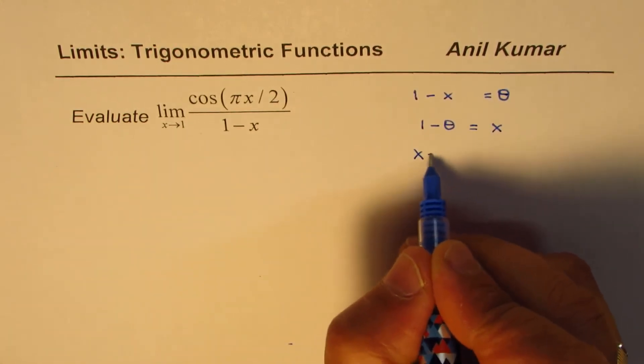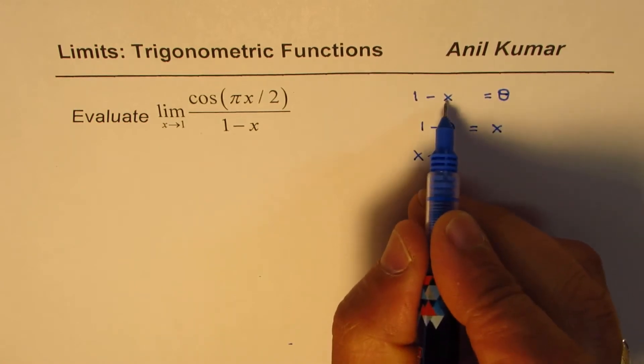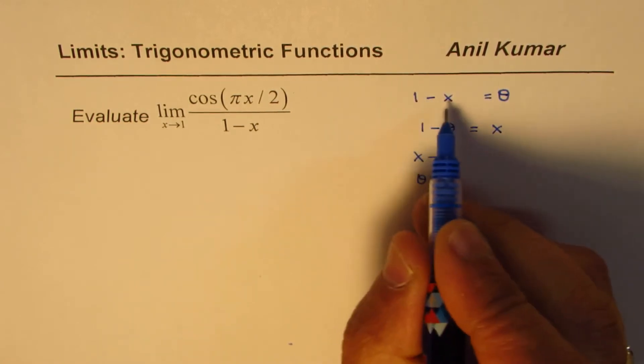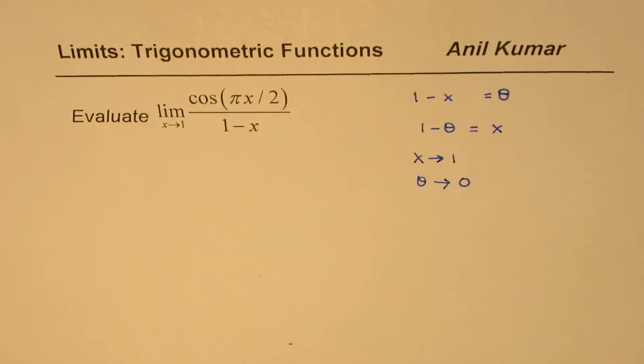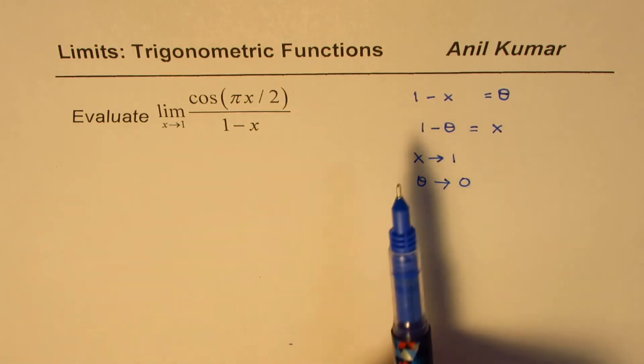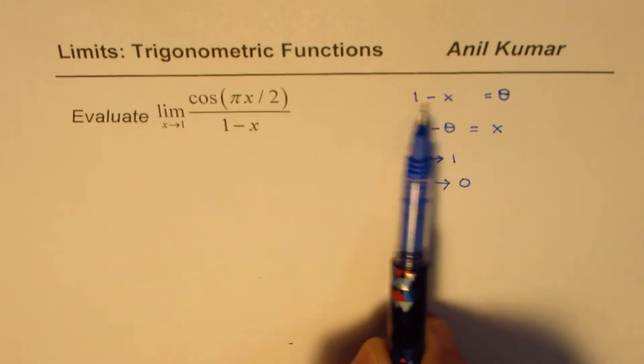Also, as x approaches 1, so θ approaches what? Theta approaches 1 minus 1, which is 0. So these are the things which we can look into while doing a substitution, 1 minus x equals to θ.